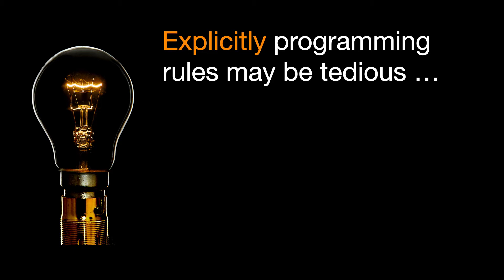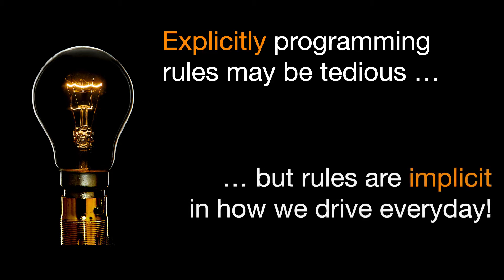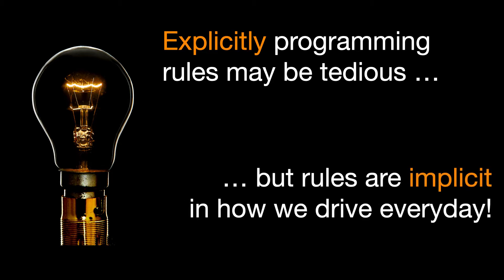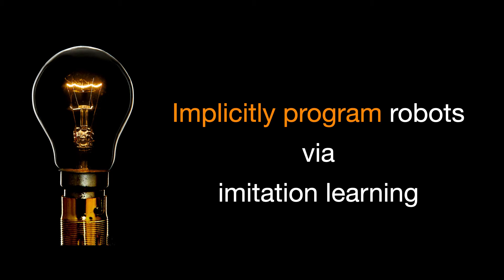Explicitly programming such rules is tedious. This is why it's hard to design robots that can truly work alongside humans. For instance, in self-driving, the right rule depends very much on what other humans are doing. But, interestingly, we humans are able to seamlessly drive every day. This must mean that the optimal behavior is somehow implicit in our driving. So, can we implicitly program robots by having them imitate human driving? Let's take a look at how this would work.